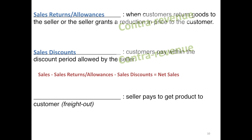Something else to briefly mention is delivery expense. This is when the seller pays to get the product to the customer — we call this freight out. Don't confuse that with freight in. Freight in is when the buyer pays to get the product to themselves, and that is actually included as part of the cost of the inventory. Please make sure you understand the difference between freight in and freight out.